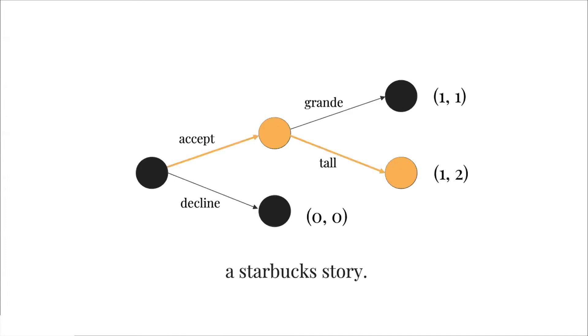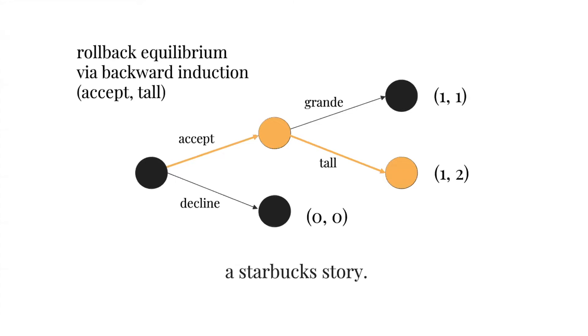Ultimately, what we've just done is obtained the rollback equilibrium via backward induction: accept tall, which gives you the complete list of actions or strategies that give you the highest utility, or in layman terms, make you the happiest.